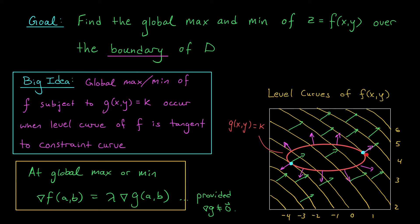Secondly, it could also be the case that your curve is not a loop like this. Maybe your constraint curve is just some curved line in space. If that's the case, it might have some endpoints, and the endpoints would have to be checked separately. And that's the big idea, folks.